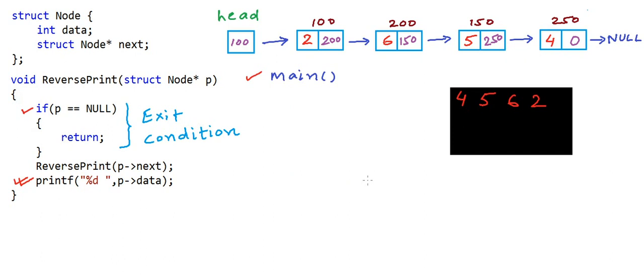That was recursive traversal of a linked list to print its elements. For normal traversal, an iterative approach is far more efficient than the recursive approach because iteration uses just one temporary variable, while recursion uses stack space for every function call — that's implicit memory usage. For the reverse print operation we need to store elements in some structure anyway, so recursion is acceptable there. In coming lessons we will solve more interesting problems on linked lists.